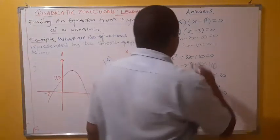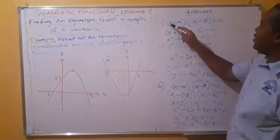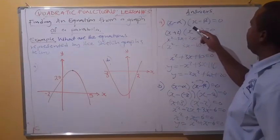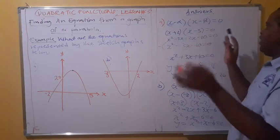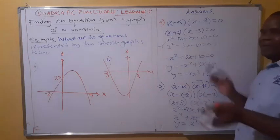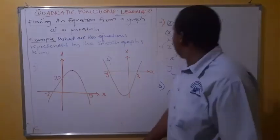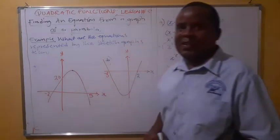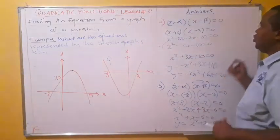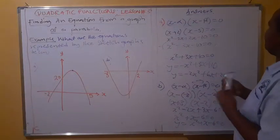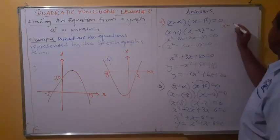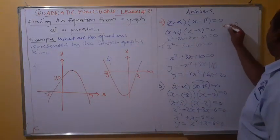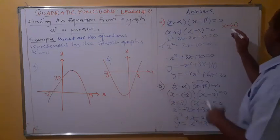What we can use is the general equation: x minus alpha, in brackets, by x minus beta, in brackets. Alpha and beta are just letters — you can use any others. For the first example, what is my x? Here, x is negative 2. So I'll put x minus negative 2 here. That is my alpha, so my alpha is negative 2.